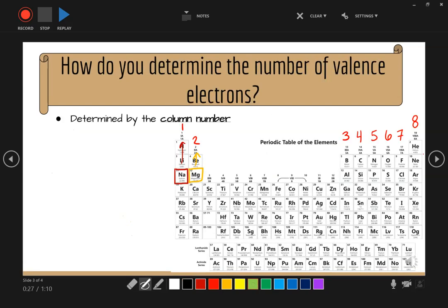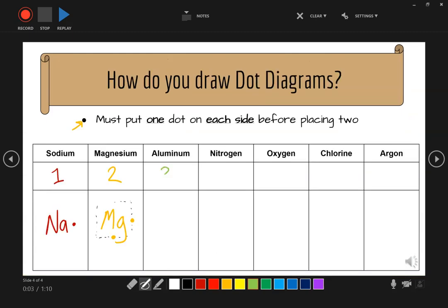Let's try another one. Aluminum. So let's find aluminum on the periodic table. And we're over here. So how many valence electrons? Three. Okay, draw the symbol for aluminum, which is Al. And we get three dots.